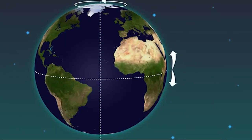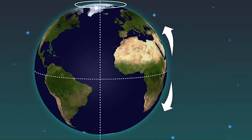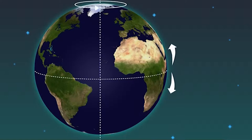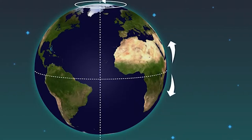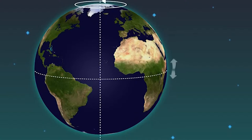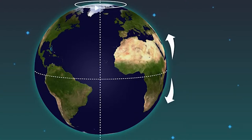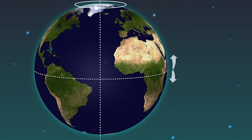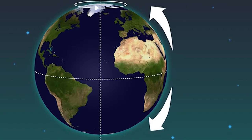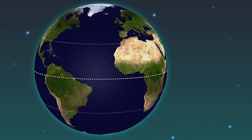The Earth below the air, however, moves slower as the air travels towards the poles. The result is that the air moves faster and faster in the easterly direction relative to the Earth's surface below, the farther it moves from the equator.